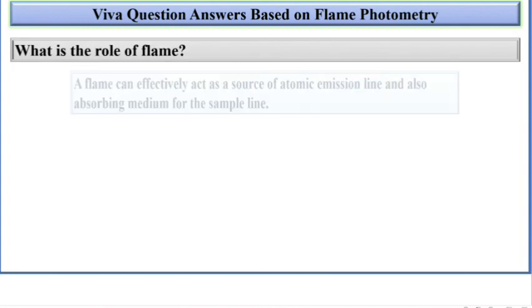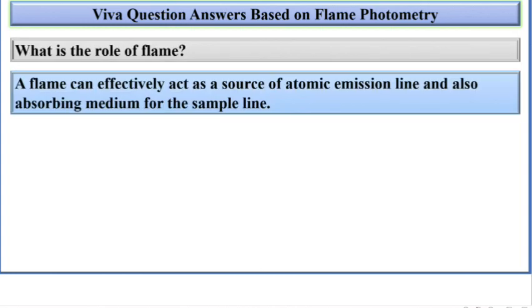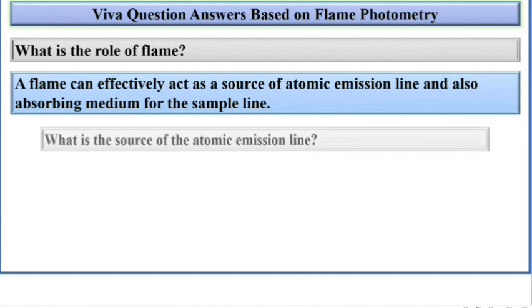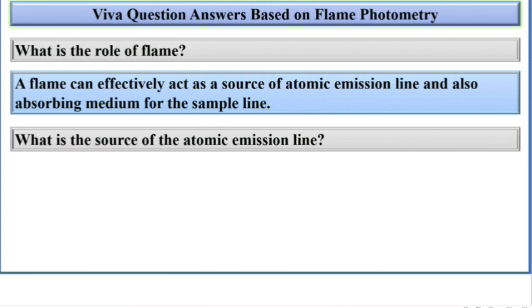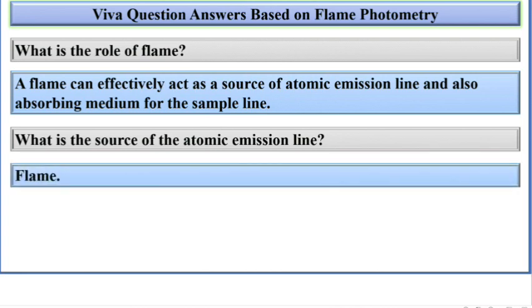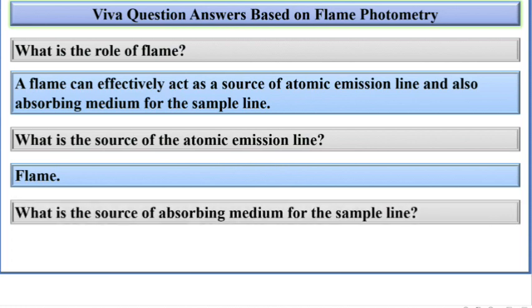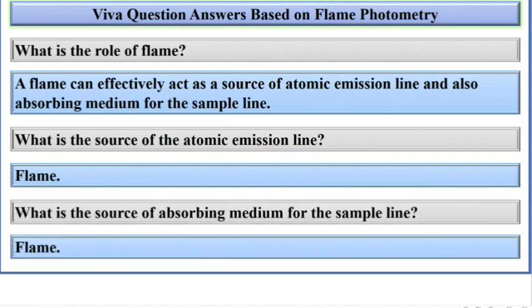What is the role of flame? A flame can effectively act as a source of atomic emission line and also absorbing medium for the sample line. What is the source of the atomic emission line? Flame. What is the source of absorbing medium for the sample line? Flame.